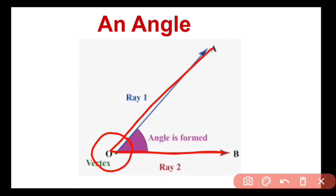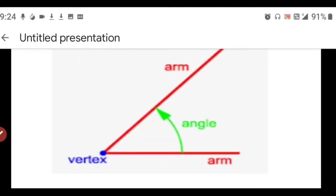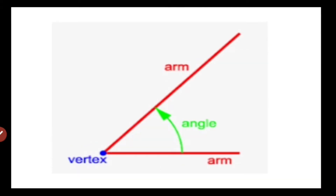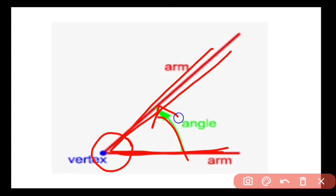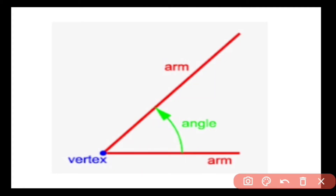Let us see one more figure. We can see that the rays are also written as arms. So sometimes the two sides of an angle are known as arms. Two arms meet each other at one point. That one point is known as the vertex of the angle and the remaining two rays are known as arms. And we can see that an angle is formed.